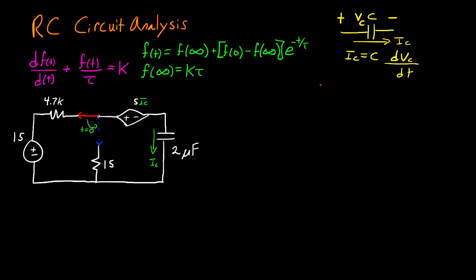We are going to be talking about RC circuit analysis, and specifically we're going to be doing our analysis in the time domain. What that means is we're going to be using our time domain equation for our capacitor. The equation for the capacitor is that the current is equal to the capacitance value multiplied by the derivative of the voltage across it.